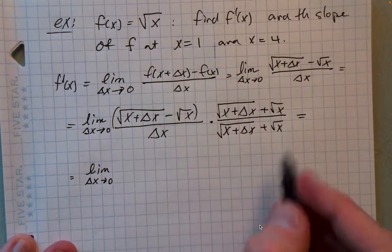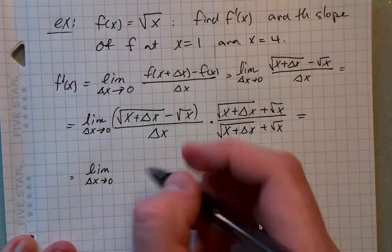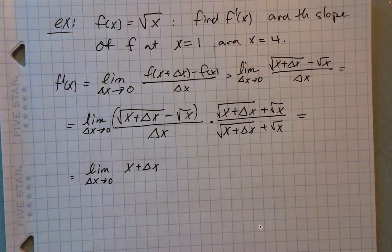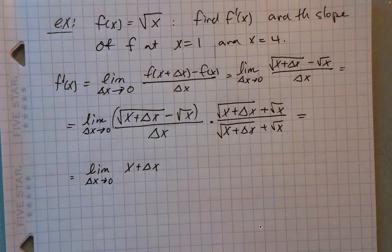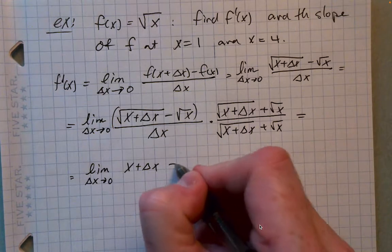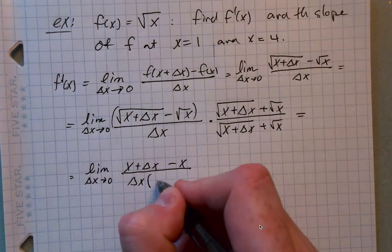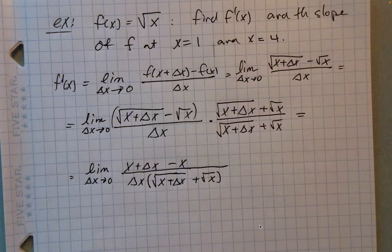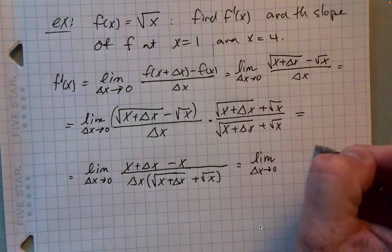Let's multiply out the top. The square root of x plus delta x times itself gives x plus delta x. Then we have two terms that are plus or minus the square root of x times the square root of x plus delta x, so those go away. And then we're left with minus x up here. If you look at that numerator, the x and the minus x undo each other.